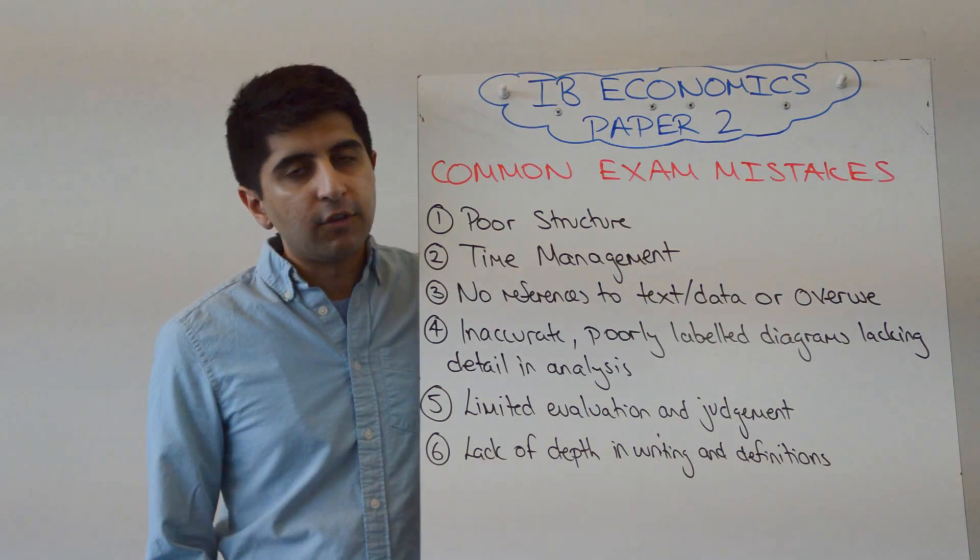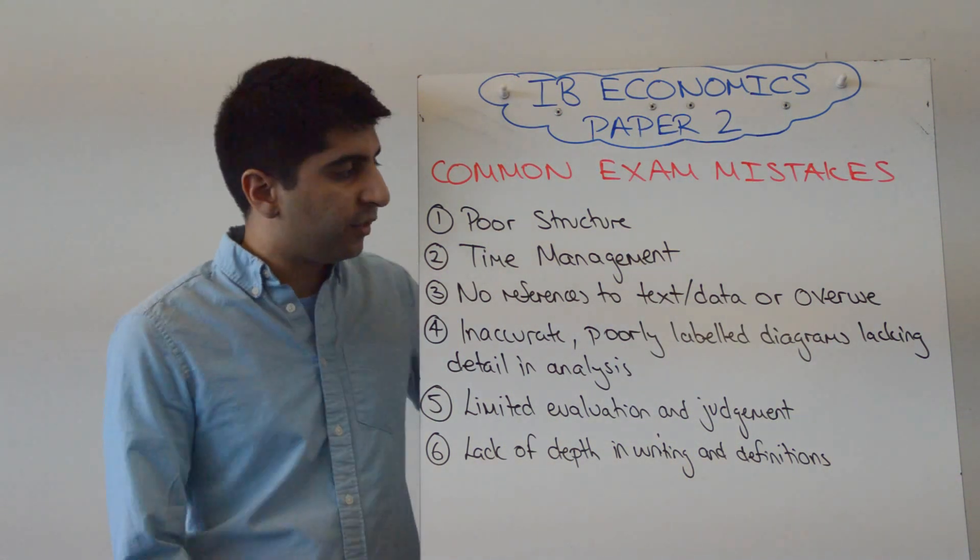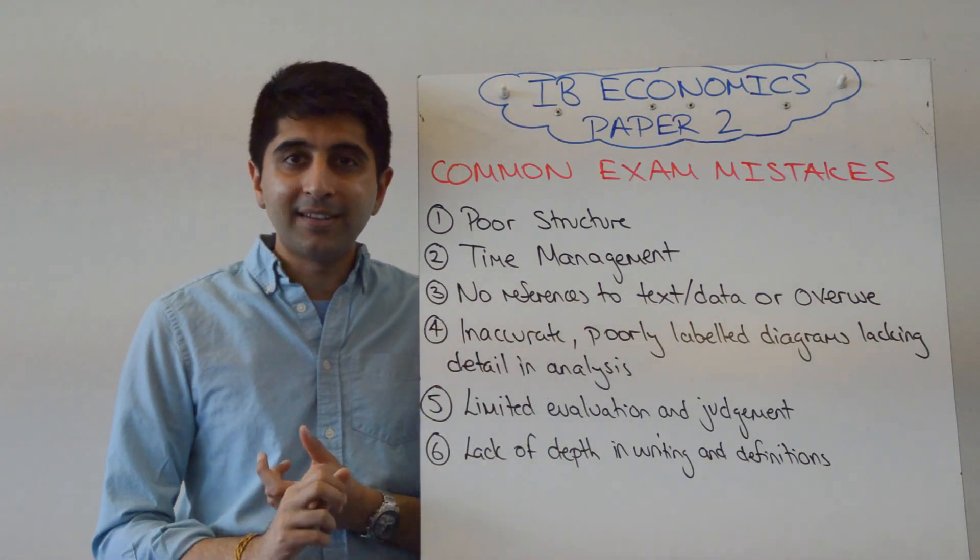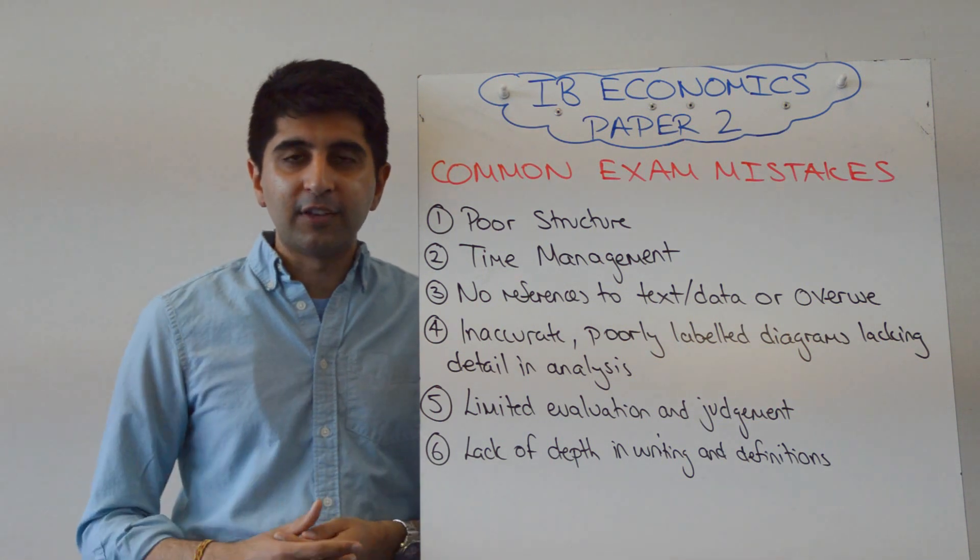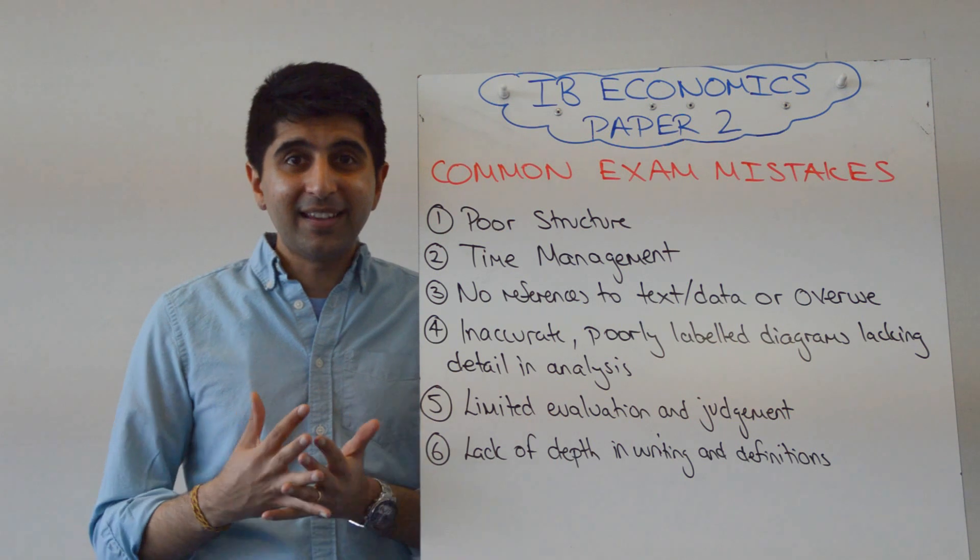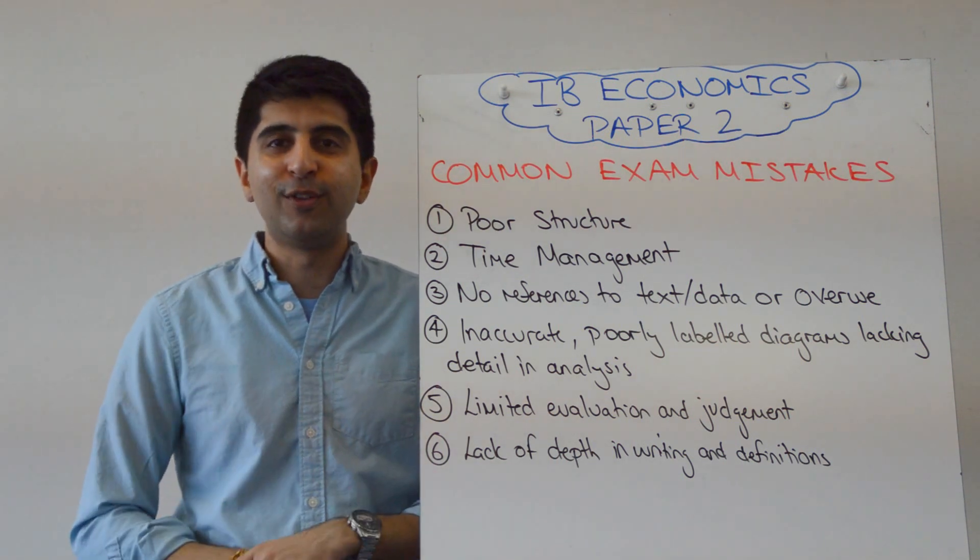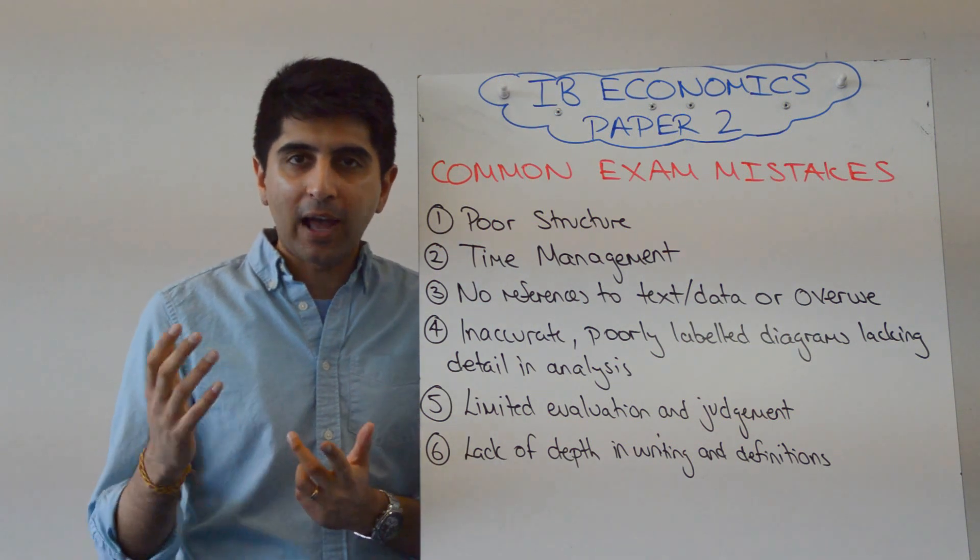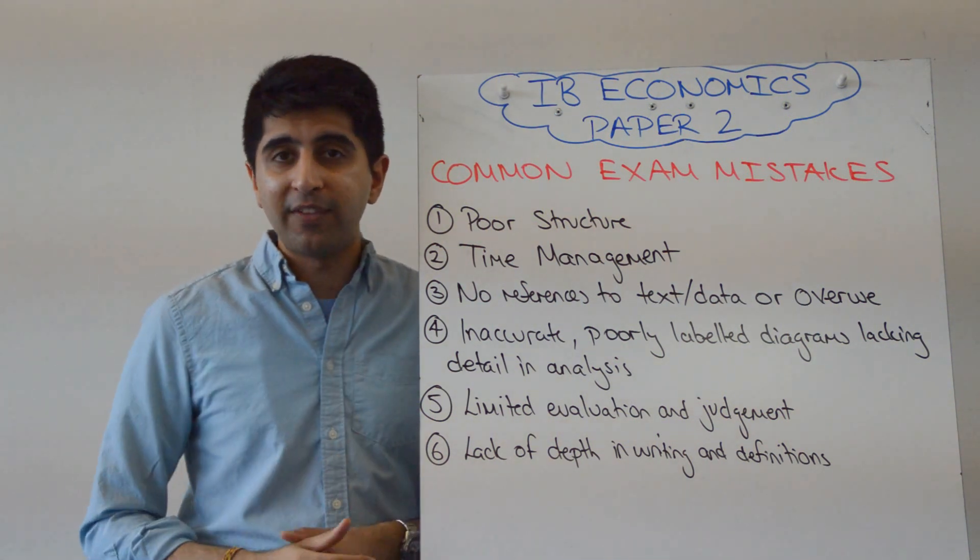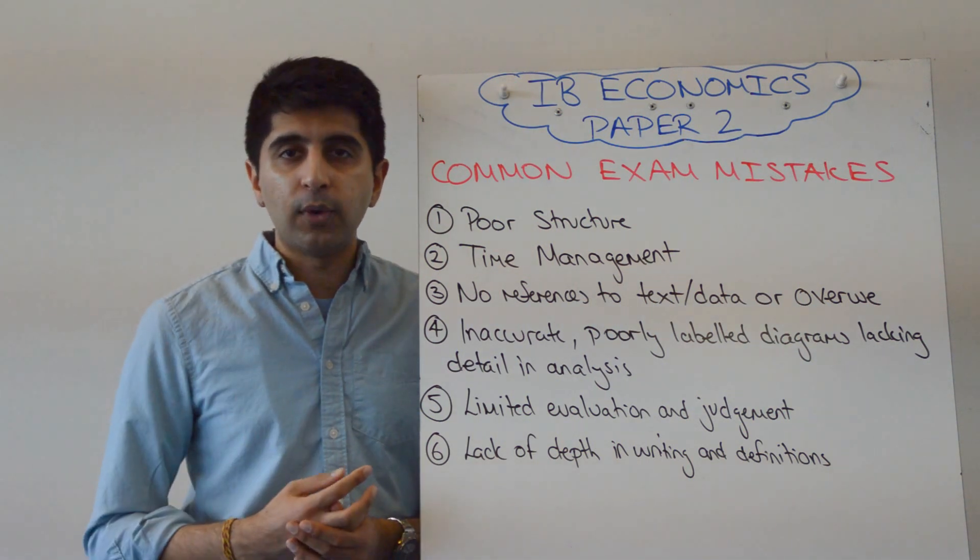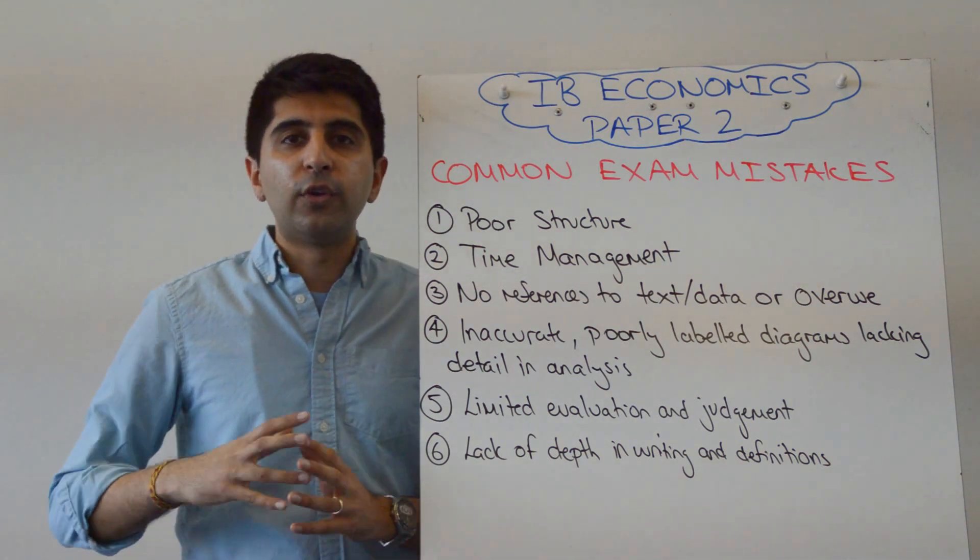Number three I'd say is a really important thing. Can you believe that IB put reference to text and data on the front cover of the examination? Now what kind of exam board would do that? Well an exam board that's basically telling you the student how important it is to do this well. So students that don't refer to text and or data when they are told to on the eight marker are in trouble. Sometimes you're told to do it on the four marker as well. So if you ignore that, you're in trouble.